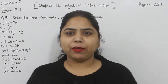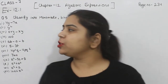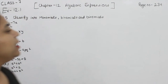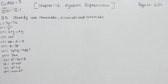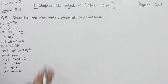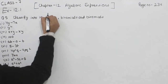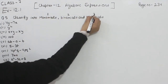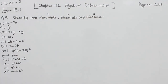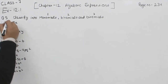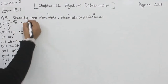Hello everyone, this is Preeti. We are here with another question of Exercise 12.1, page number 234, question number 5: classify into monomial, binomial, and trinomial. We know that the monomial contains one term, binomial two terms, and the trinomial three terms. Starting with the first one: 4y minus 7z — we are having two terms here.